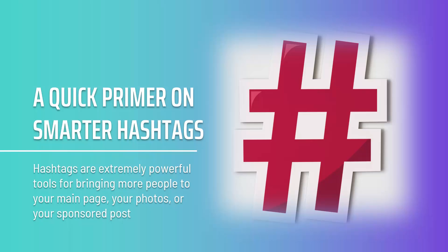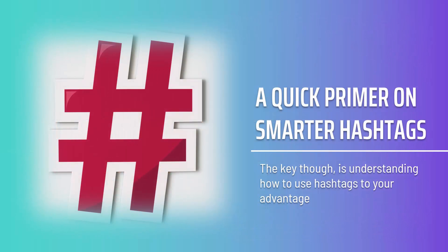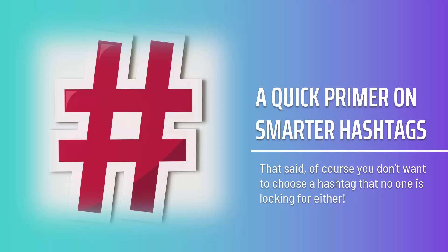Instagram now also lets users search for stories by hashtag, so it's important to know how to use them well. Hashtags are extremely powerful tools for bringing more people to your page. A hashtag simply tells Instagram what a photo is about, allowing it to categorize the content so people can search for it. A common mistake is to presume that the best hashtag is the most popular one — the most popular Instagram tag is actually 'love.' But using such a tag means your post gets buried before it has any chance to shine. That said, you don't want to choose a hashtag no one is looking for either. The best strategy is to aim for a hashtag that has around 30,000 posts a day.